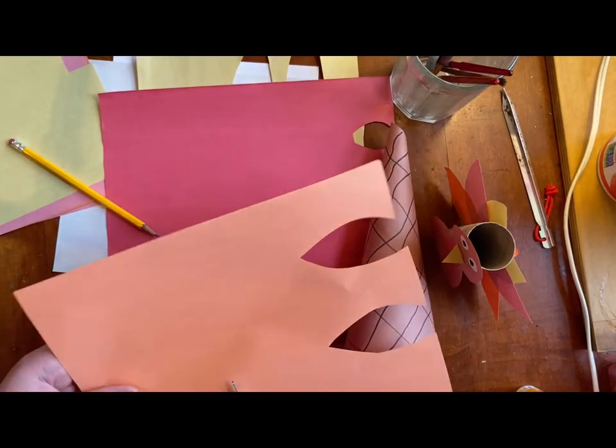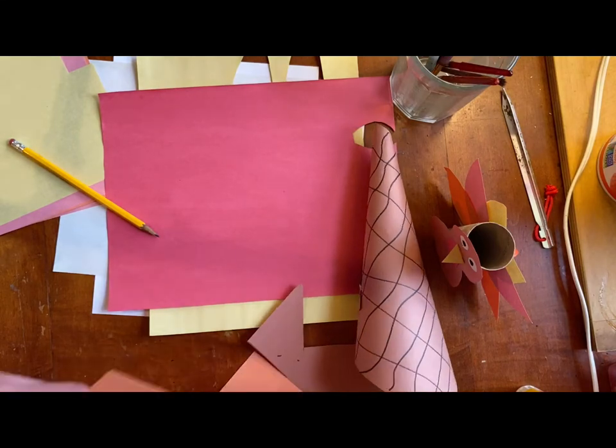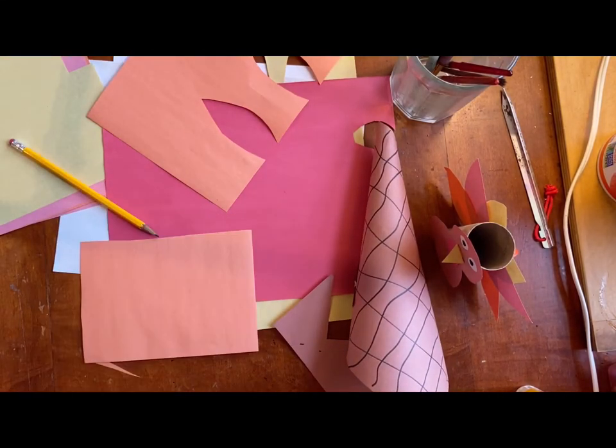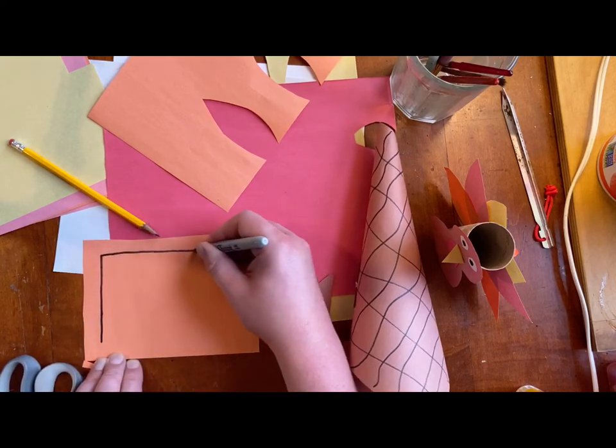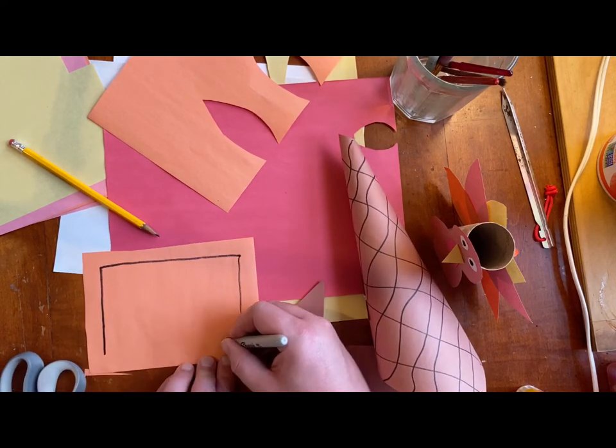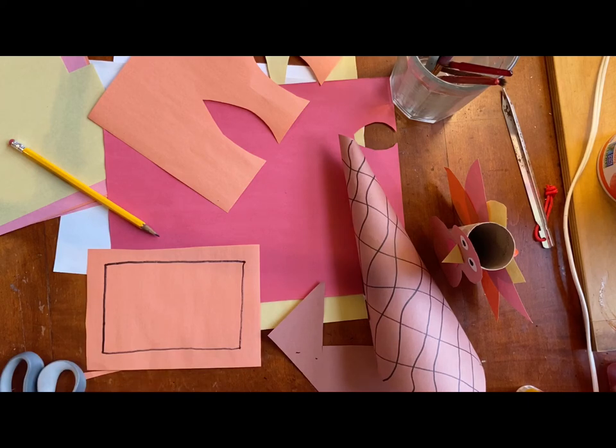Now I'm going to make a place mat to set my horn of plenty on. I'm just going to cut another rectangle from one of my pieces of scrap paper. It doesn't have to be super big, but just big enough to put your horn of plenty and your turkey on.